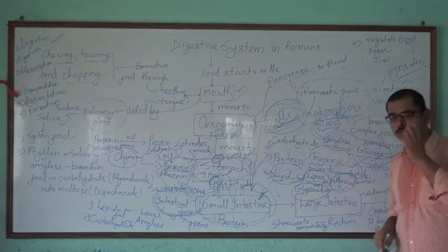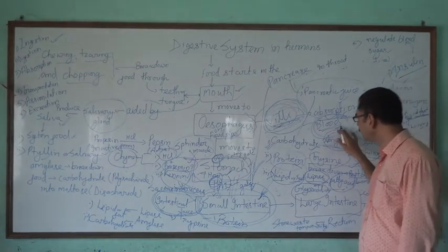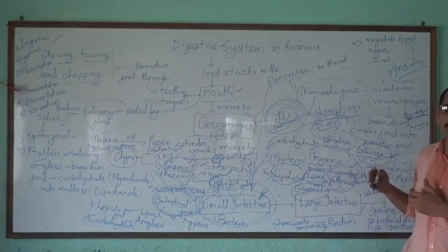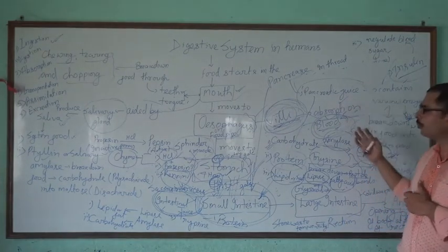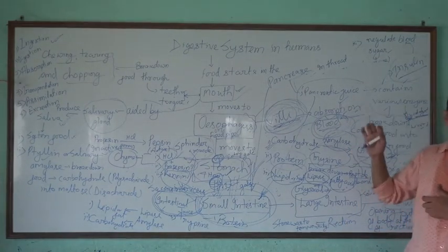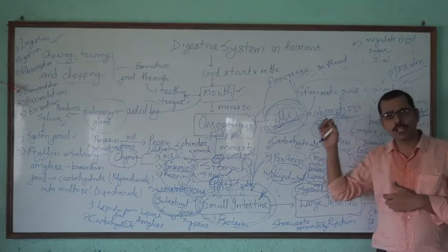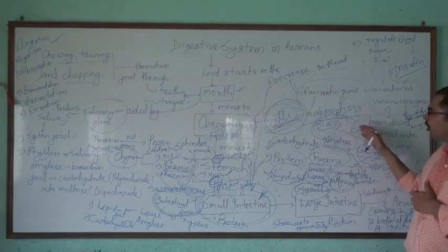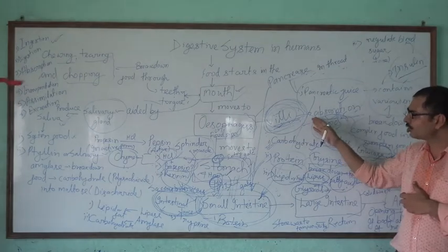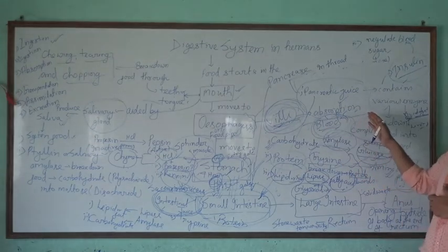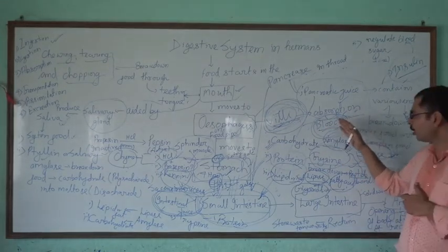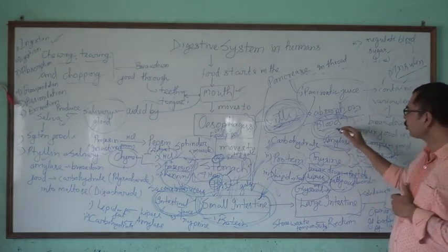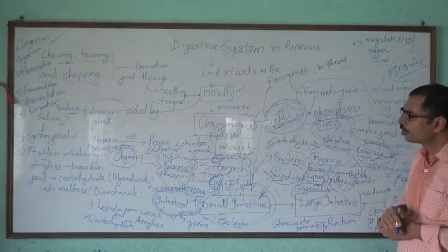Osmosis transfers digested food from the villi into the bloodstream. With the help of the blood, nutrients will be transferred to all parts of the body, to all organs and all cells. The process of transfer of nutrients to all parts of the body to fulfill energy needs is called transportation.